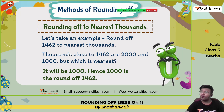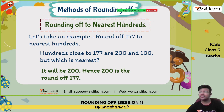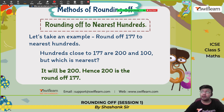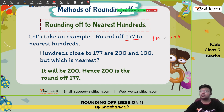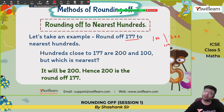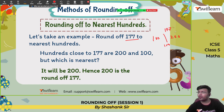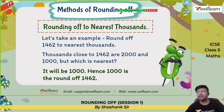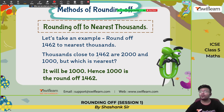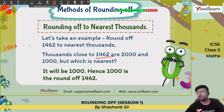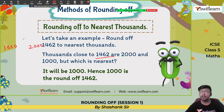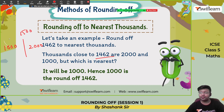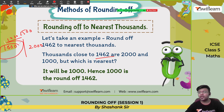Rounding off to the nearest hundred: let's take the example of 177. The nearest hundreds are 100 and 200. The midpoint is 150. Since 177 is to the right side of 150, it is closer to 200, so the round off is 200. Rounding off to the nearest thousand: for 1462, the nearest thousands are 1000 and 2000. The midpoint is 1500. Since 1462 is to the left of 1500, it is nearer to 1000, so the nearest round off is 1000.